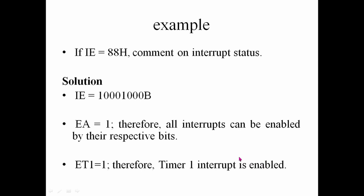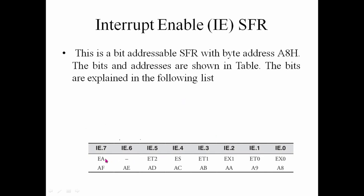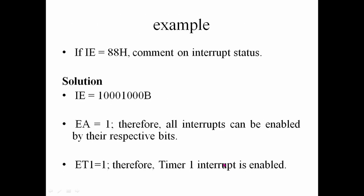For example, if IE is equal to 88H, that is 10001000 in binary. Entering this into the IE register sets EA=1 and ET0=1, with serial communication, Timer 1, and external interrupts all set to 0. Timer 0 is then enabled.